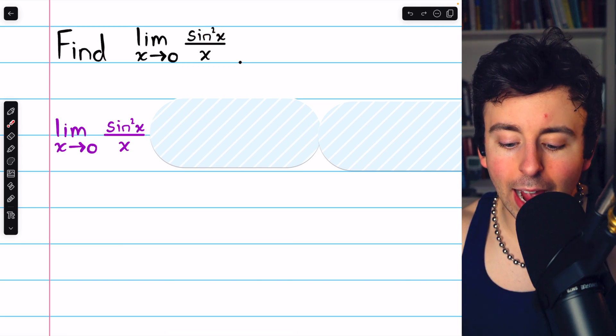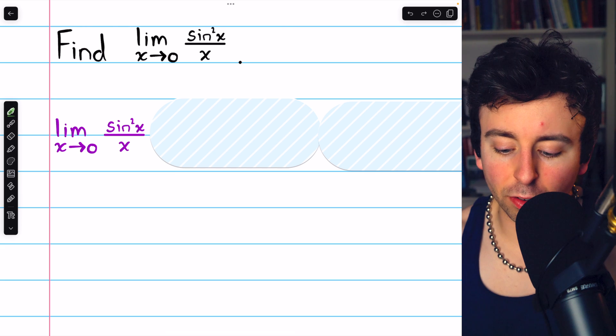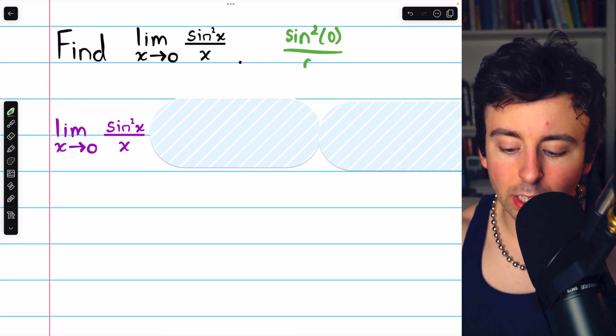How do we find the limit of sine squared x over x as x approaches 0? Certainly, we can't just plug 0 in because sine squared of 0 is 0 divided by 0. Well, that's undefined.